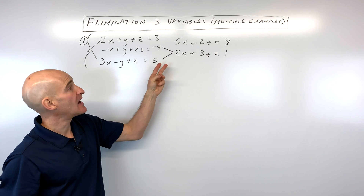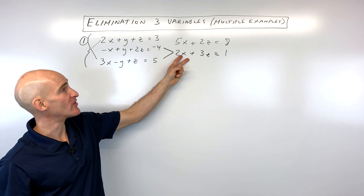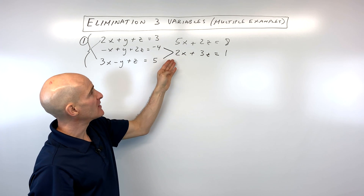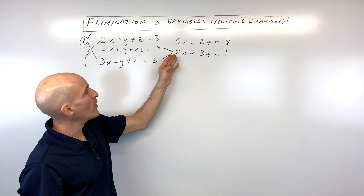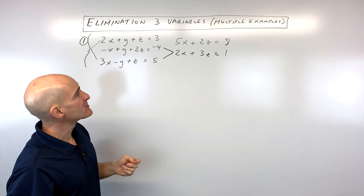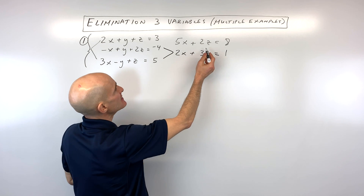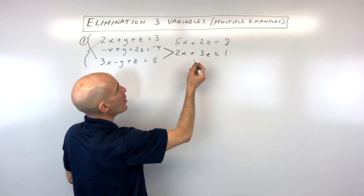So now we went from three variables and three equations down to two variables and two equations. We have to decide whether to eliminate the x's or the z's. Either one is fine — I'm going to try to eliminate the z's because these coefficients are a little bit smaller.